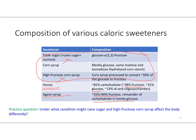The fructose and glucose in high fructose corn syrup might be absorbed more rapidly under those conditions compared to cane sugar.